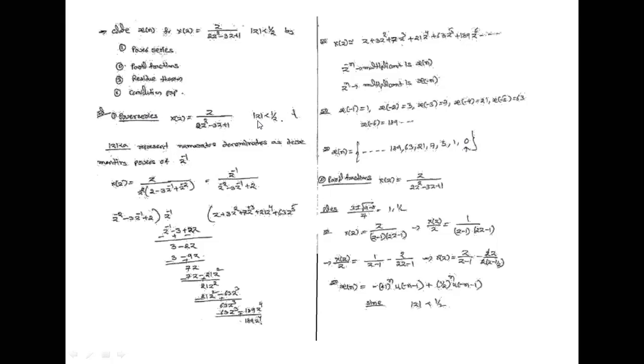Since |z| < 1/2 means the left-hand side, the sequence has values only for negative n: {..., 189, 63, 21, 7, 3, 1, 0, 0, ...} with the arrow at n=0. For |z| greater than means right-hand side: rewrite in ascending order, divide to get negative powers of z, and take coefficients from n=0 to infinity.